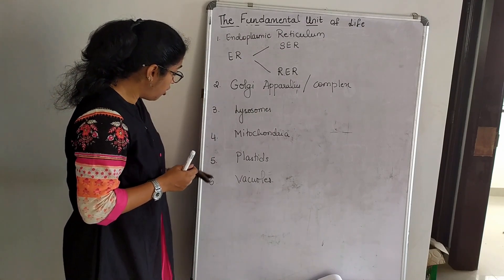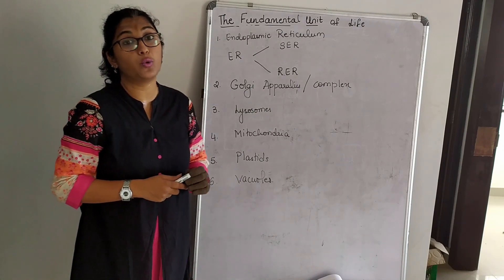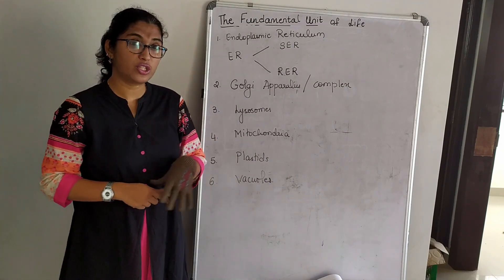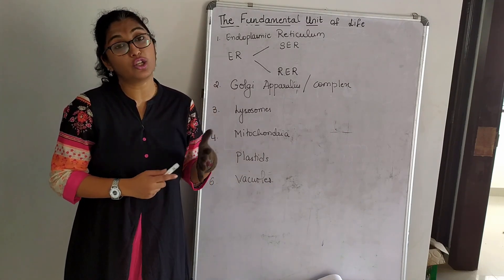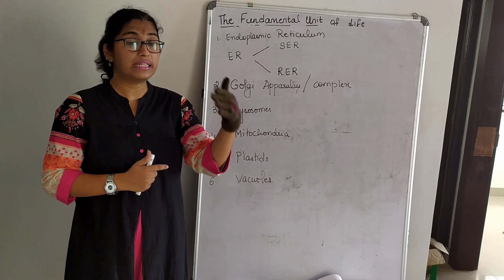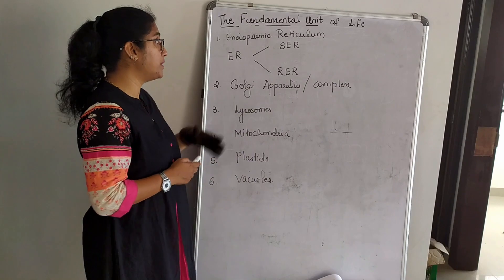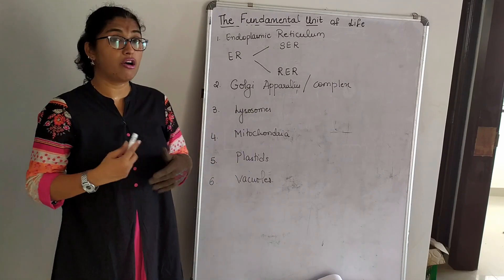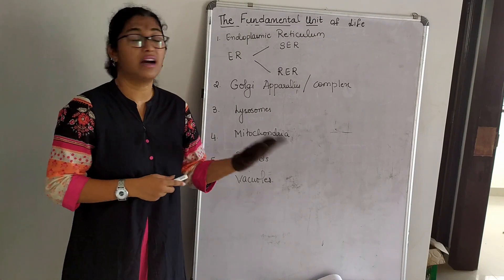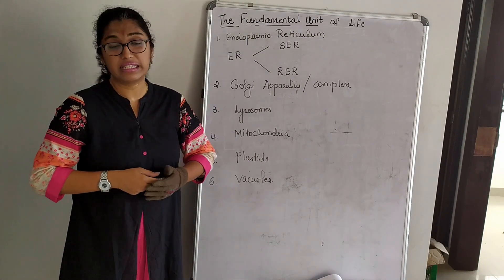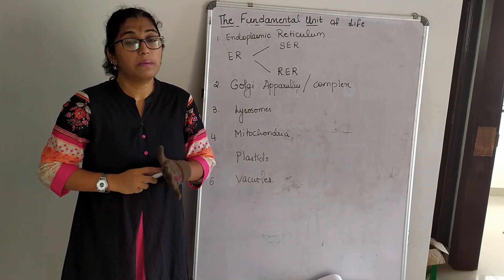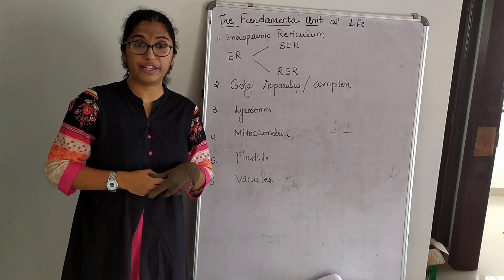We will study all six cell organelles in our next class. In today's class we studied the three components of the cell and their properties and functions, and we listed the six cell organelles present in a cell. Their functions and how they work will be covered in the next class. If you have any doubts, please ask on the same day.